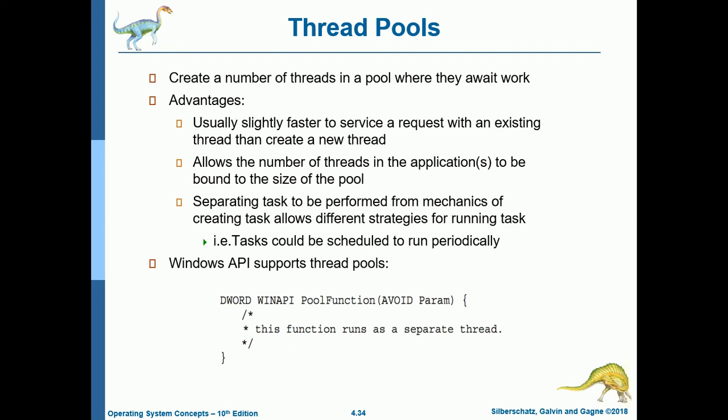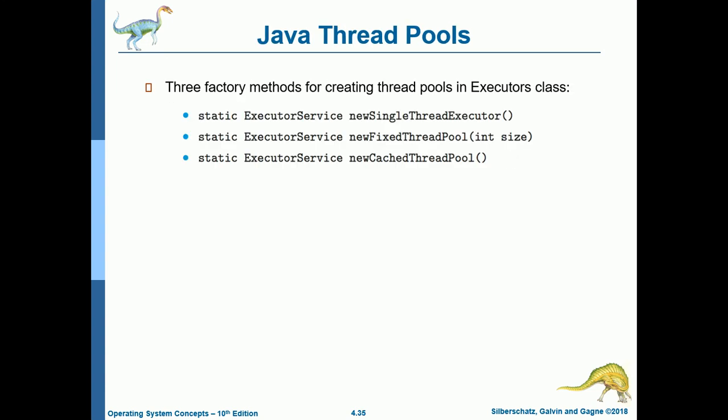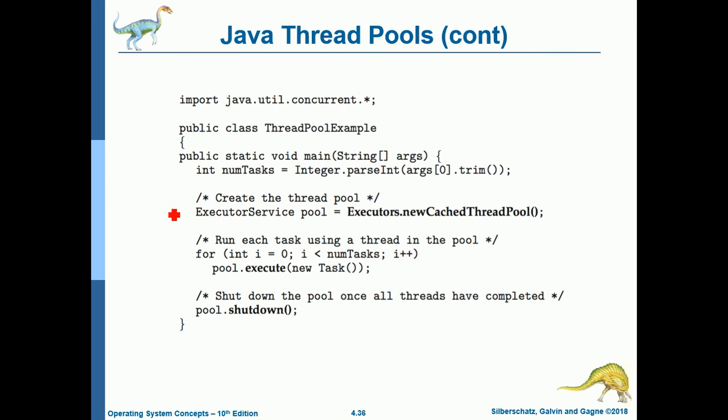Thread pools create a number of threads in a pool where they await work. Advantages include: it is usually slightly faster to service a request with an existing thread than create a new one; it allows the number of threads to be bound to the size of the pool; and it separates tasks from the mechanics of creating them, allowing tasks to be scheduled to run periodically. The Windows API supports thread pools, and Java provides three factory methods: newSingleThreadExecutor, newFixedThreadPool, and newCachedThreadPool.